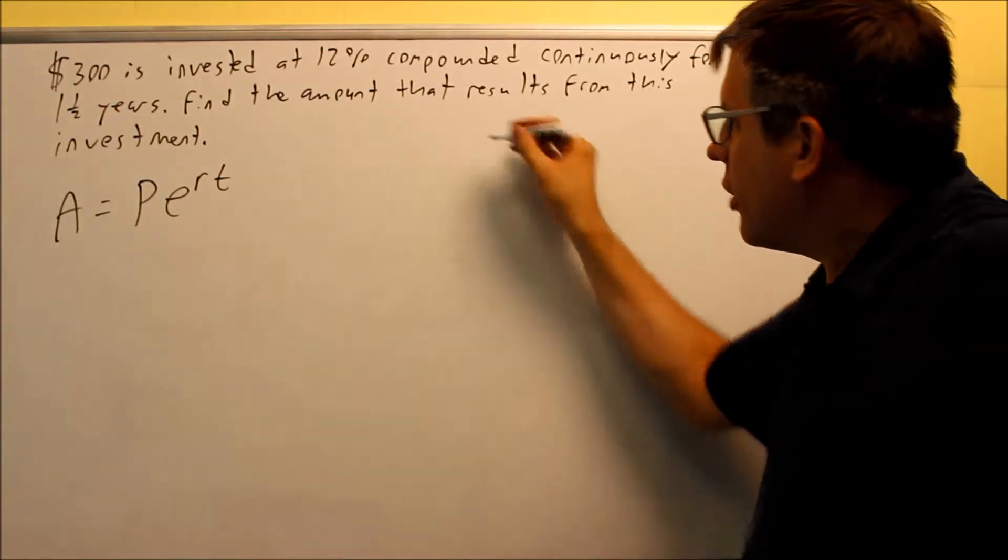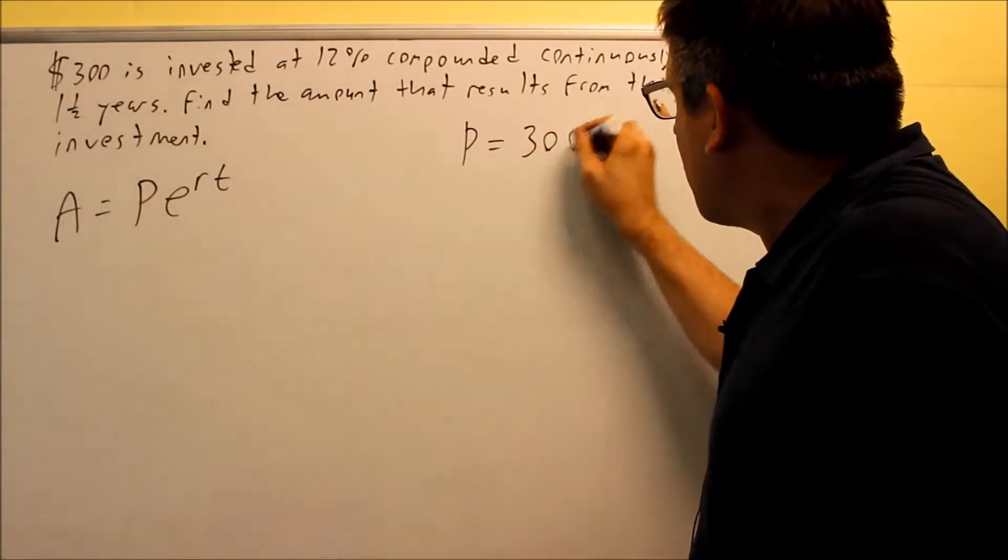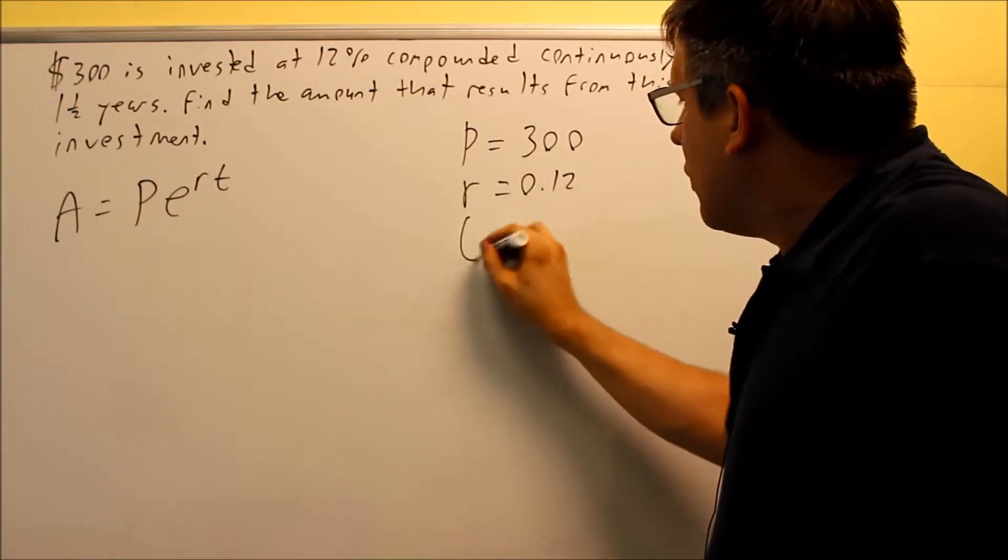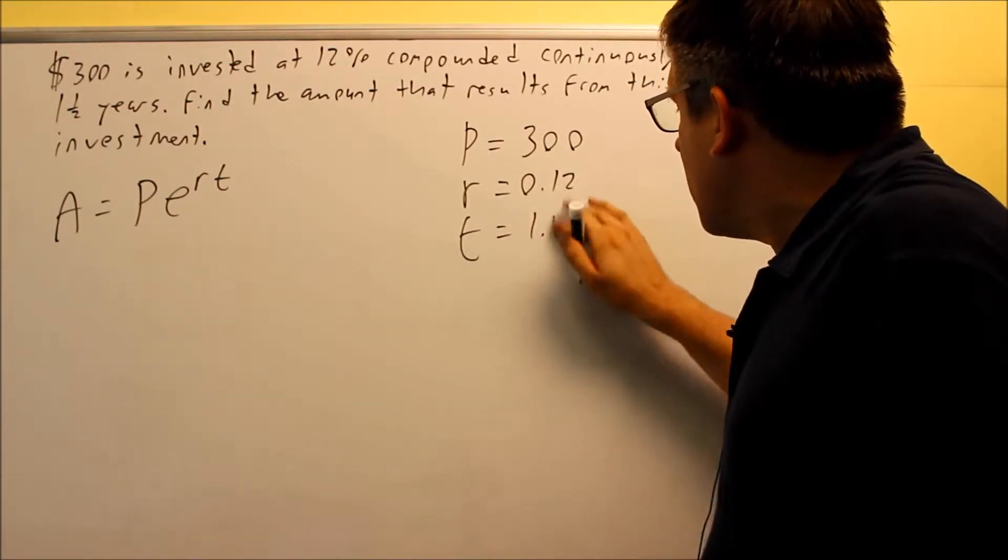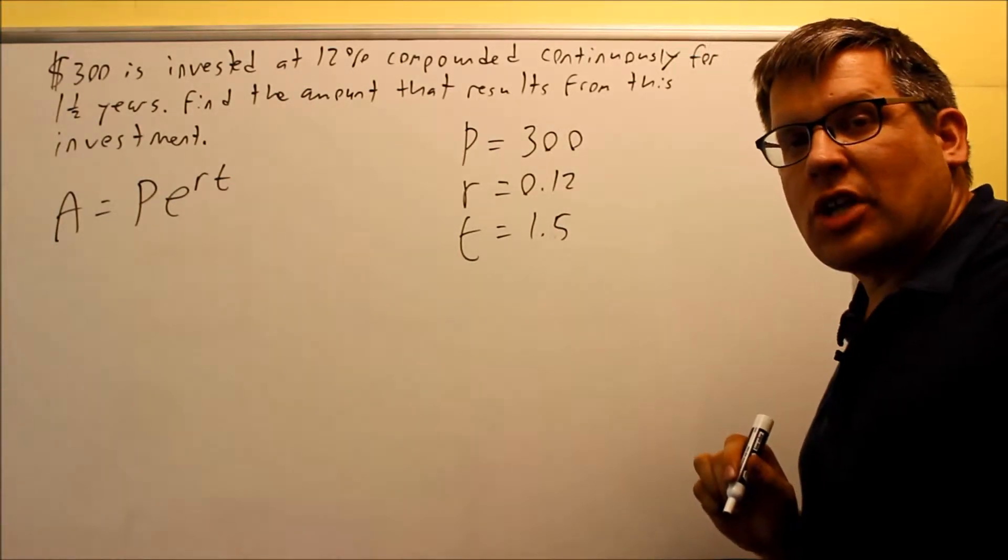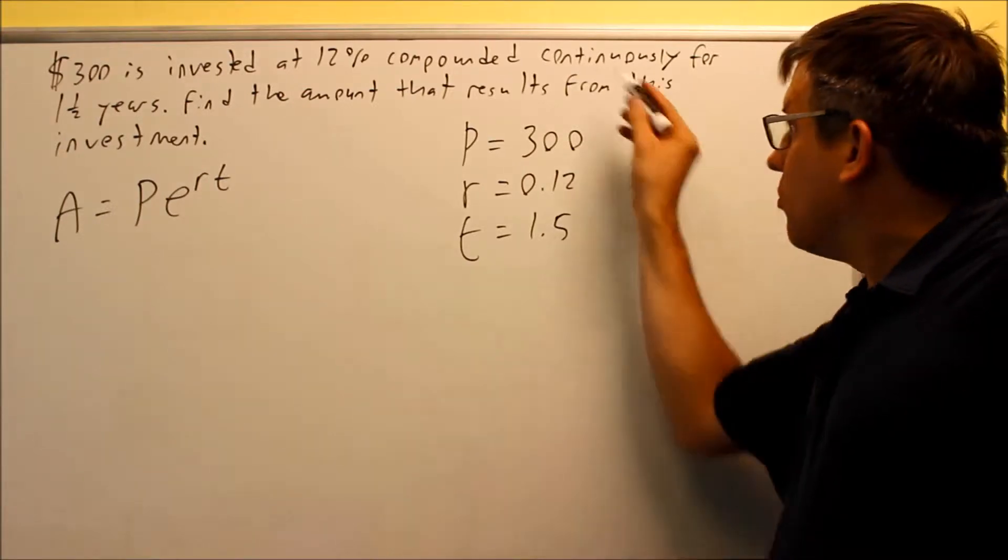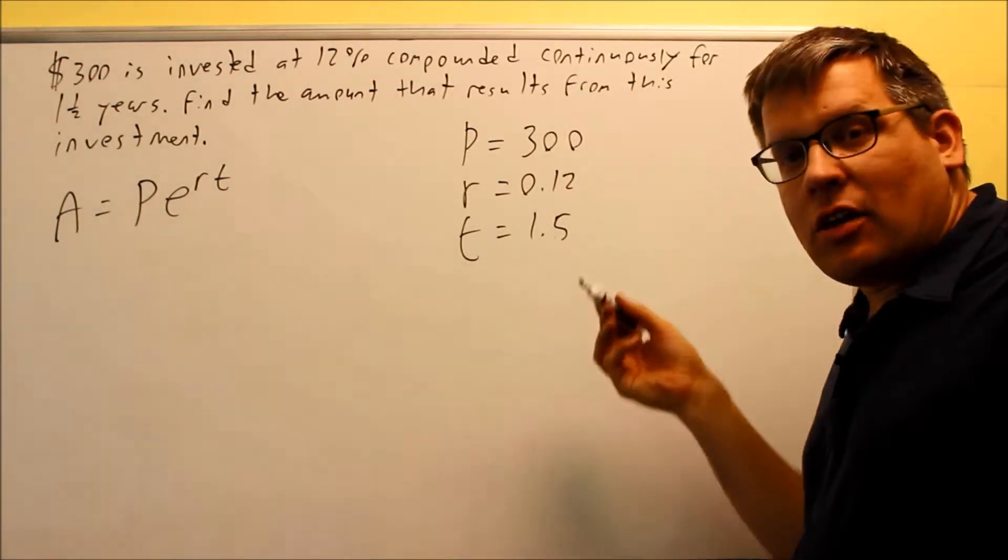Now your P is still going to be 300 like before. Your rate is still going to be 0.12 and then your time is 1.5. So all of these are actually going to be the same as what we had for the previous example. The difference now is that we don't have a word monthly or weekly so we don't have an N in this case.